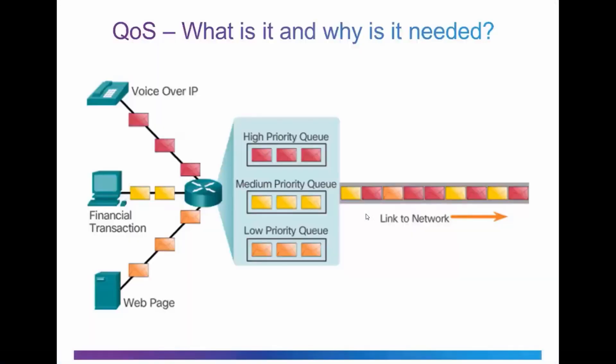QoS — what is it and why is it needed? QoS, or quality of service, allows us to prioritize certain types of traffic over others. Different types of traffic place different demands on the network. Video and voice traffic require greater resources and more bandwidth to achieve the quality needed for phone calls or streaming video. Financial transactions are time-sensitive and have greater needs than a web page or regular data traffic like sending an email.